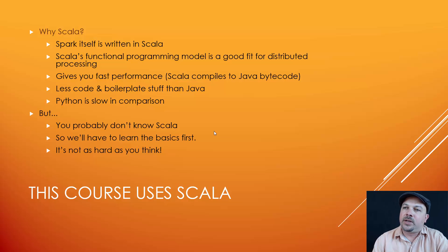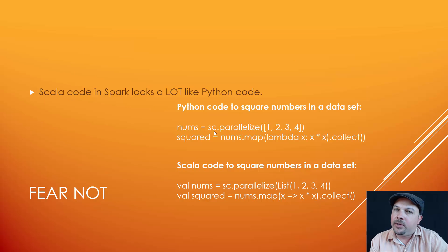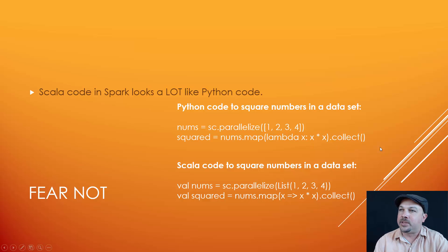It's really not as hard as you think. If you have done Spark programming before in Python, you'll find that Scala code looks a lot like Python code in the context of a Spark job. Look at these two examples that do the same exact thing in Python and Scala — the syntax is slightly different; we have val qualifiers, whereas in Python you don't need to declare that.